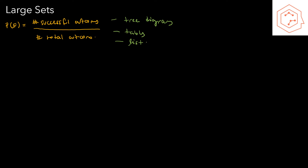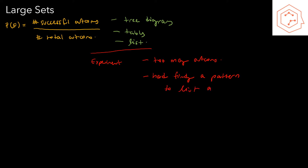Now this approach is not wrong and will always be successful. The only problem is what happens when you have an experiment that is either too complex with too many outcomes, where listing all of them would take too much time or you might forget a couple, rendering your result incorrect — or it's hard to even begin finding a pattern to list all possible outcomes. In both these cases, we're going to have to resort to the counting rules we saw in an earlier video.